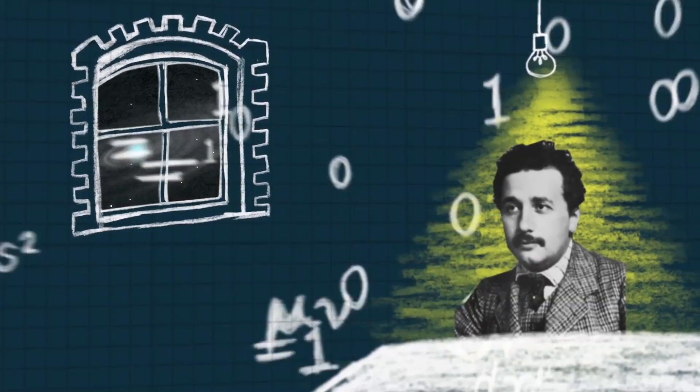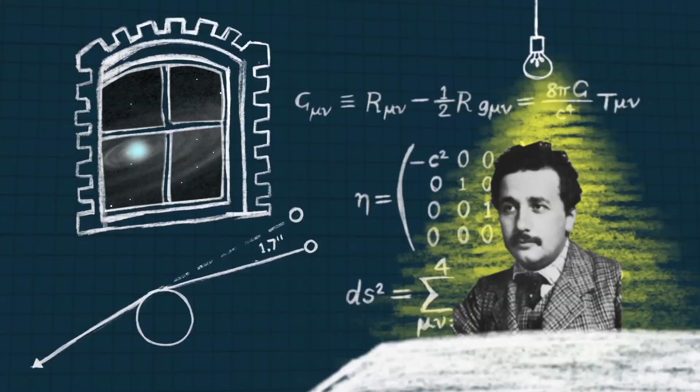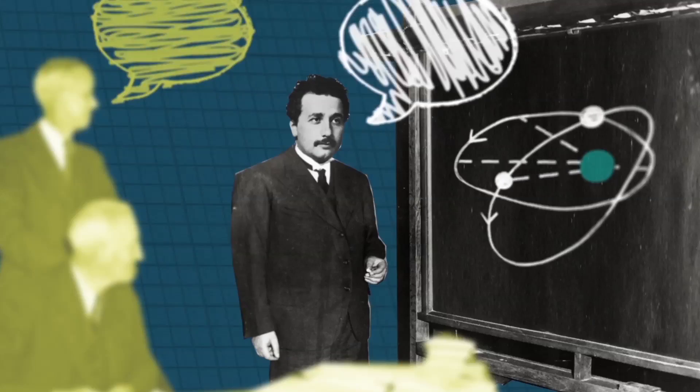In 1915, Einstein revealed his masterpiece, the General Theory of Relativity. For the first time, scientists could get to grips with how the entire cosmos behaves.